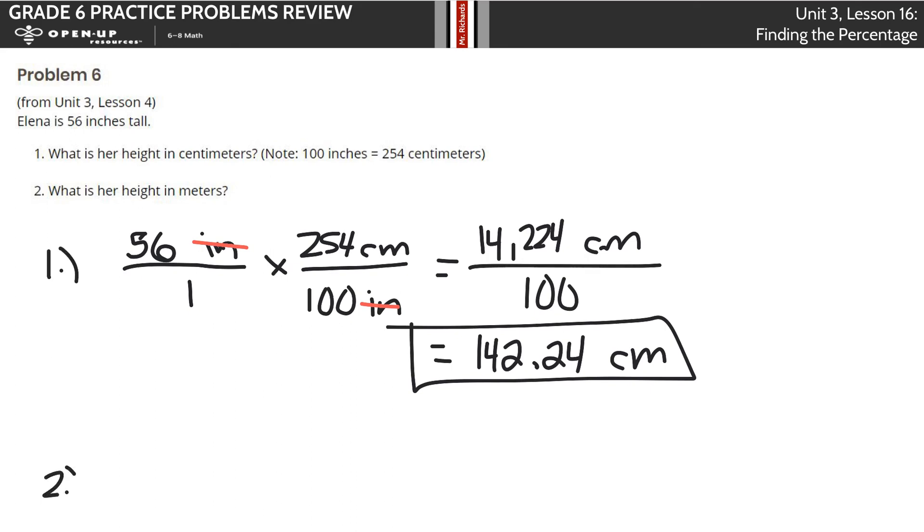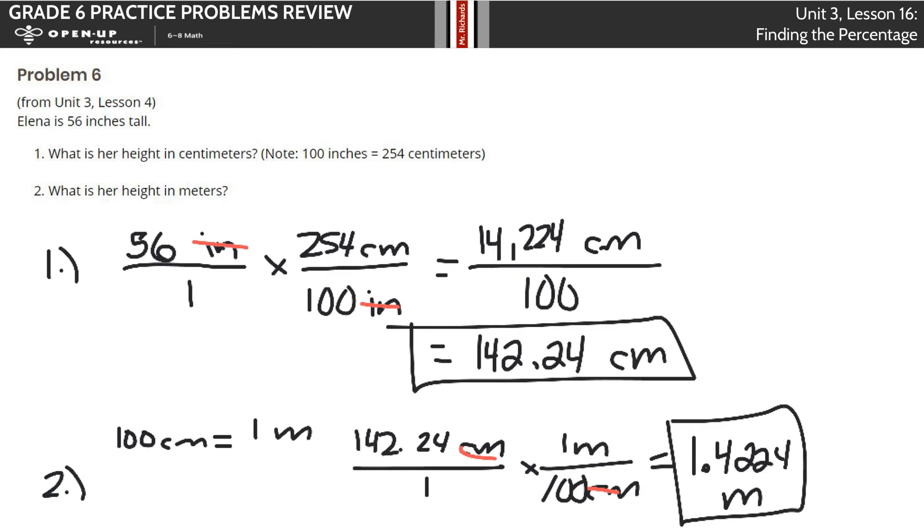Part two now, to finish the question, how do I get that height into meters? 100 centimeters equals one meter. If I take this 142 and 24 hundredths centimeters over one, multiply it by the fact that one meter is 100 centimeters, what I'm actually doing here is just dividing 142 and 24 hundredths divided by 100, and I get a final answer of 1 and 4,224 ten-thousandths meters.